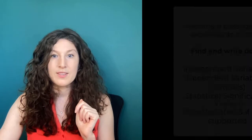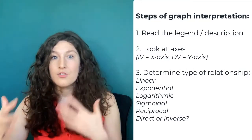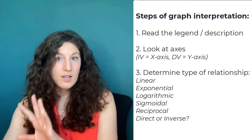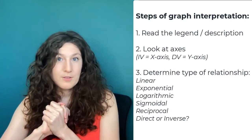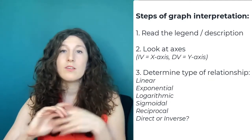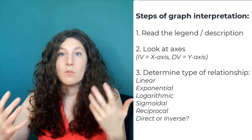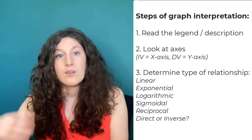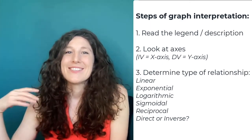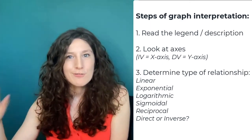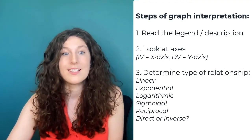Let's get more specific with the type of data you'll see. If you're given a graph, read the description or legend first, then look at the axes. Generally speaking, the independent variable is on the x-axis and the dependent variable is on the y-axis. We also want to know what type of relationship we have — is it linear, exponential, logarithmic, sigmoidal, direct, or inverse? All of these are words that you should be comfortable with on test day.